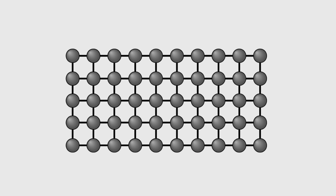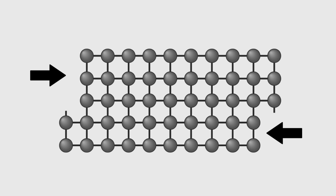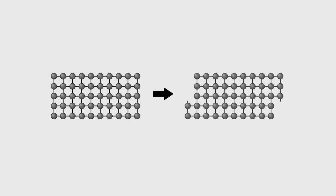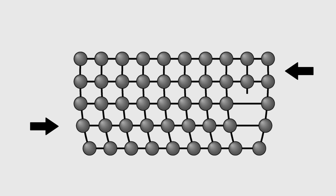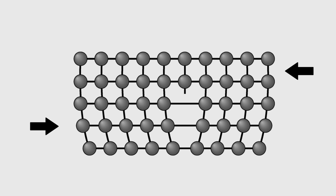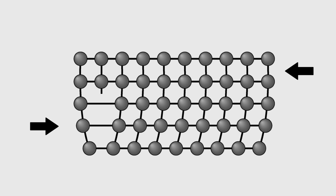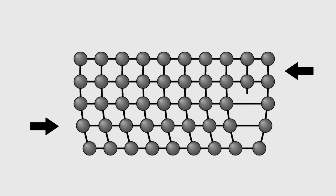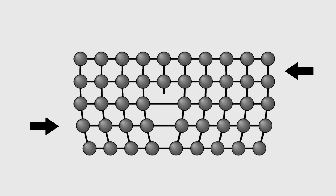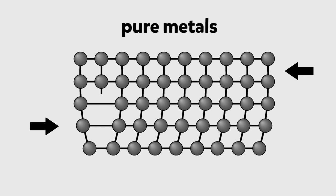When metals change shape, atoms actually slip over each other like this. However this process does not happen all at once but bit by bit, rather like trying to move a carpet by putting a ruck in it. Here is the way it happens in a metal. You see the slip moving easily one atom at a time where there's a dislocation in the lattice. It is this easy movement of atoms in the crystal lattice that makes most pure metals soft.